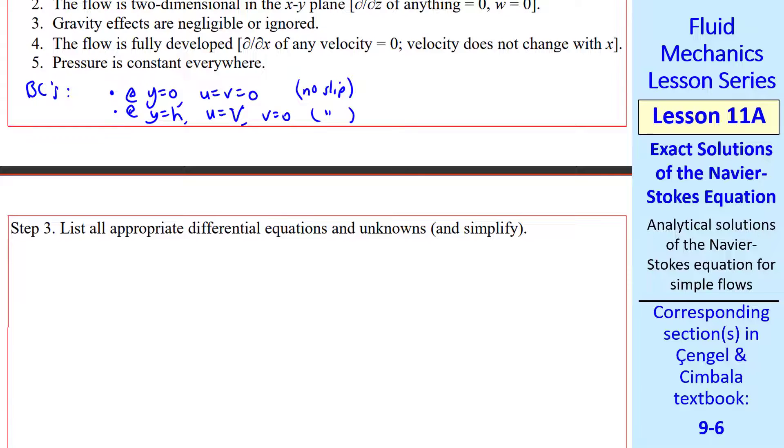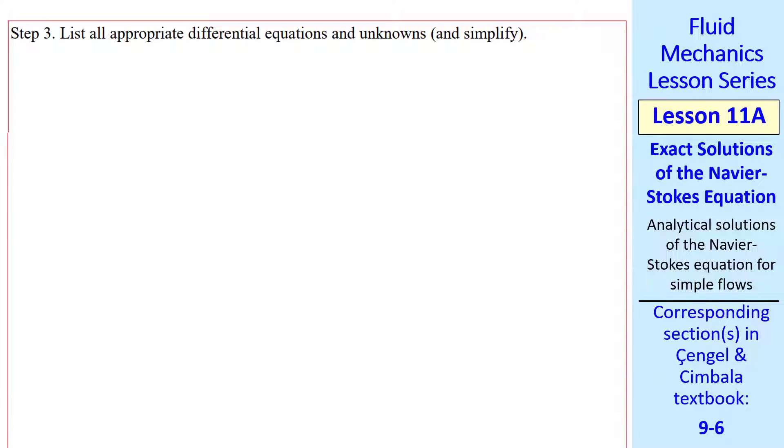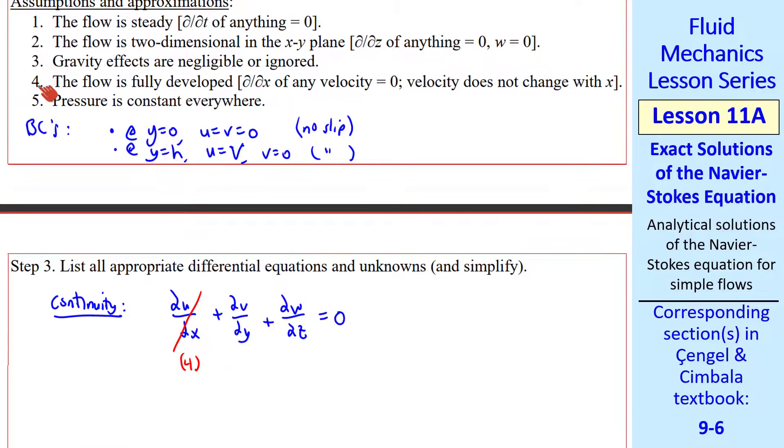Now we list all appropriate differential equations and simplify. I start with continuity in Cartesian coordinates. To simplify, I cross off terms and under each term I put the assumption number. Approximation four is fully developed, so del del x of any velocity is zero. The 2D approximation is number two. So continuity reduces to del v del y equals zero. I'll call that equation one.